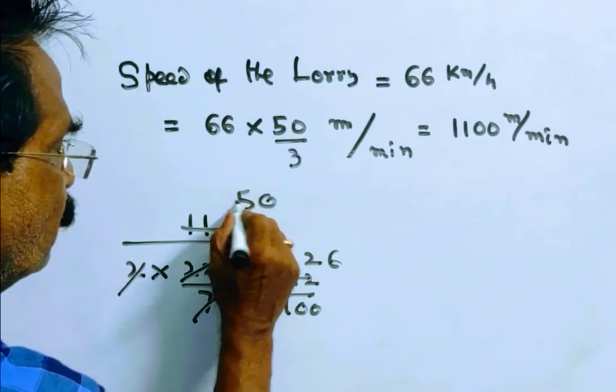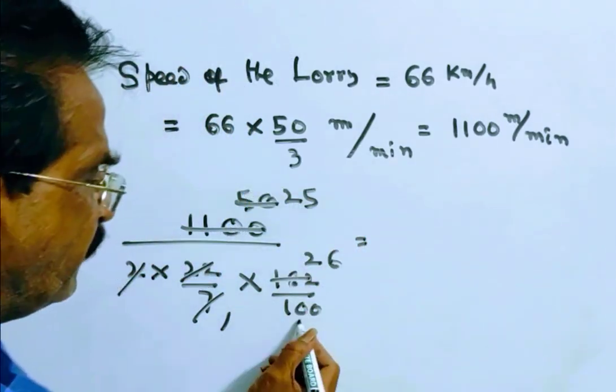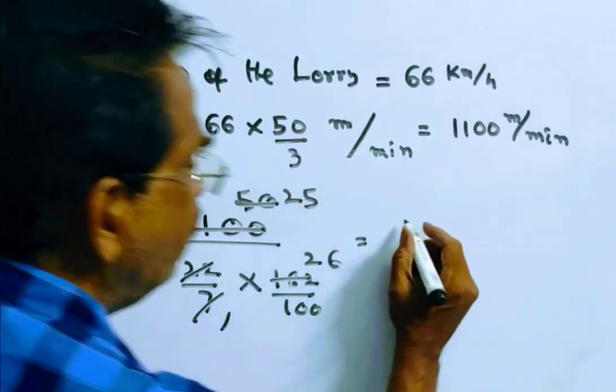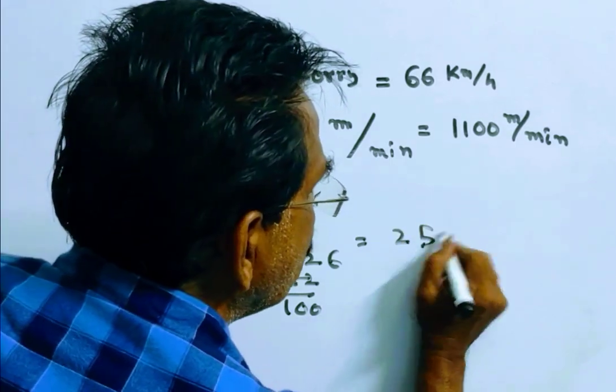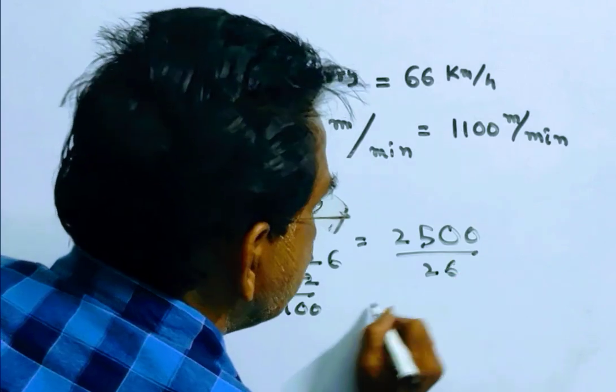2 ones 2, 25s. This is equal to 25 into 100, 2500 by 26. This is approximately 96.